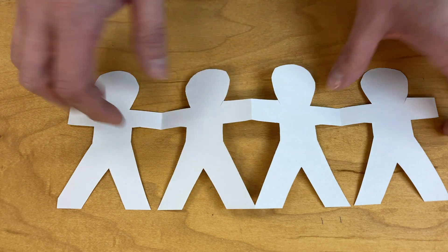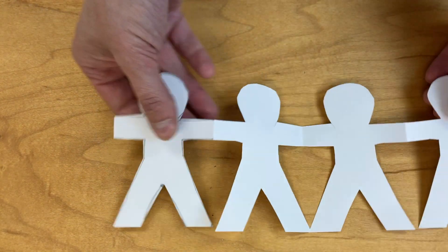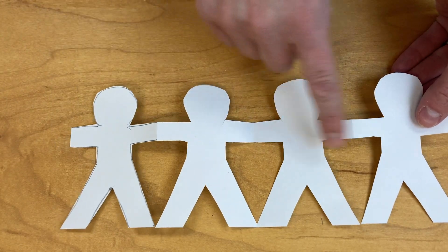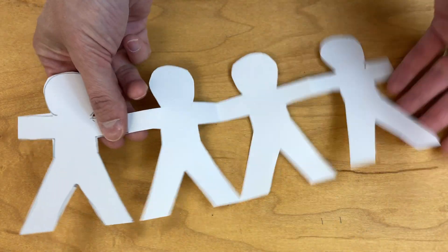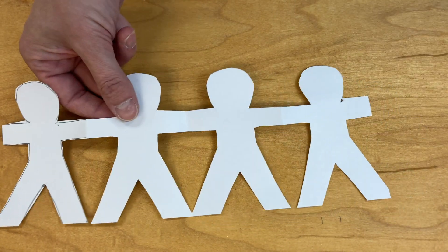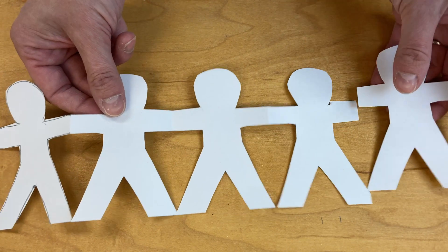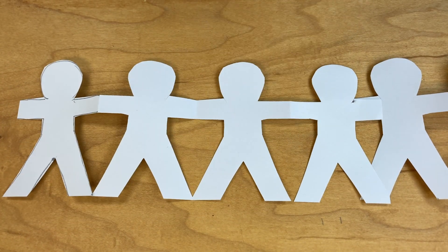Or another thing you could do is you could decorate this side of each of the paper people, and then you could turn it over and decorate the back as someone else in your family. Then you'd have four family members on this side and some of your family members on this side. It's up to you. But I want you when you're finished decorating your paper people to take a picture and submit it to me in Seesaw.